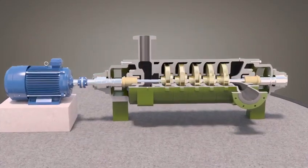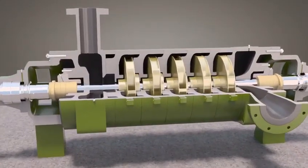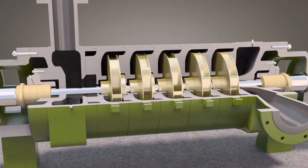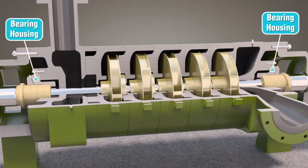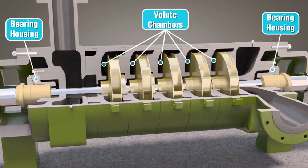The pump casing is the body of the pump and contains the shaft and impellers. The casing provides shaft bearing housings at each end and a volute chamber for each impeller.